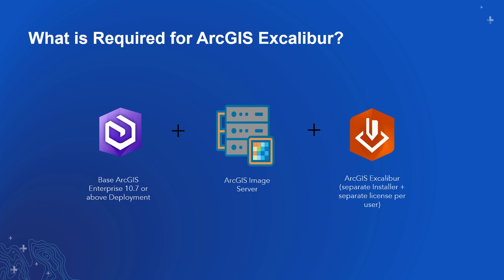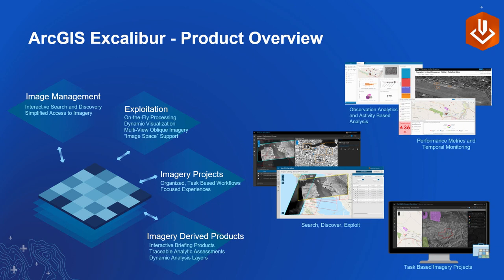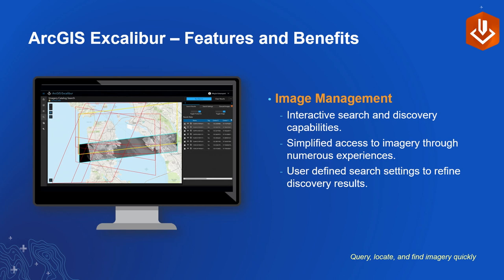Within Excalibur, you have four major components. You have integrated imagery management — accessing, discovering, and searching for your imagery. Because it's integrated with the platform, we take advantage of Image Server for on-the-fly processing and dynamic visualization, including viewing images side-by-side. Then imagery projects, which are about organizing all resources for a task. And finally, imagery-derived products — so you can search for imagery, conduct analysis, and share information as information products, all in the same application.